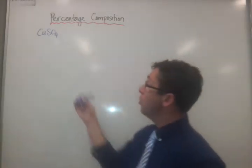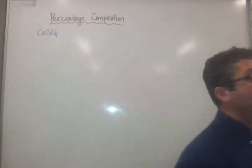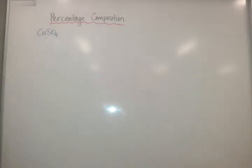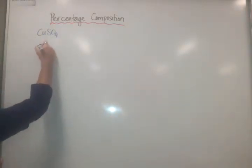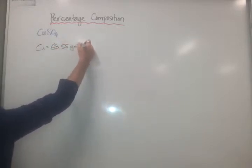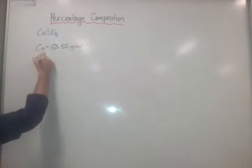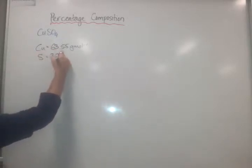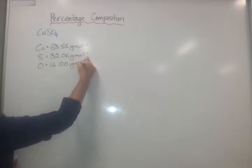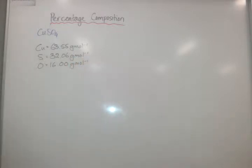Instead what we do is we work out the molar masses and the molar mass of the whole thing. So if we know copper, and we've got this in the back of our books, so I'll get you guys to call these out. We know that copper is 63.55 grams per mole, and sulfur is 32.06 grams per mole, and oxygen is 16.00 grams per mole. Then we can use these numbers to work out what percentage of this is sulfur, what percentage is copper, what percentage is oxygen.